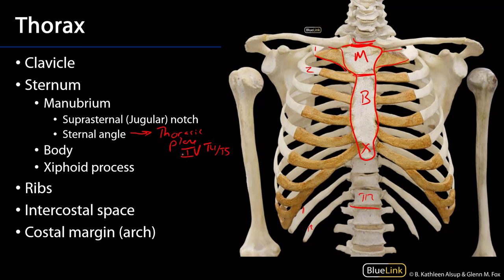Now between the ribs are the intercostal spaces. Because there are 12 ribs, there are only 11 intercostal spaces, and the intercostal spaces are named for the rib at the superior border — so this is rib one and this is the first intercostal space, rib two and the second intercostal space, and so on down to the 11th intercostal space. Below the level of the cartilage that attaches the inferior ribs to the xiphoid process, we have the costal margin or arch, which is palpable.